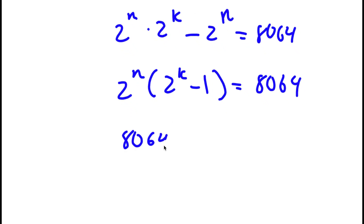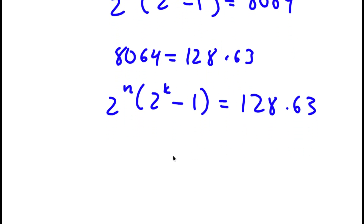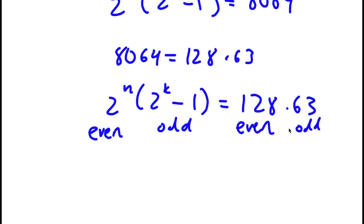Now 8,064 is simply equal to 128 times 63. So I have 2 to the power of n times 2 to the power of k minus 1 equals 128 times 63. Notice that 2 to the power of n is even, and 2 to the power of k minus 1 is odd, because 2 to the power of k is even and an even number minus 1 is odd. And 128 is even while 63 is odd. So I can set the even factors equal to each other and the odd factors equal to each other.